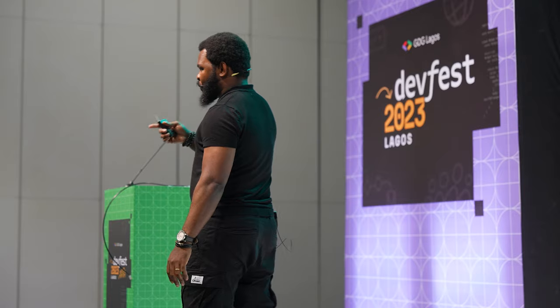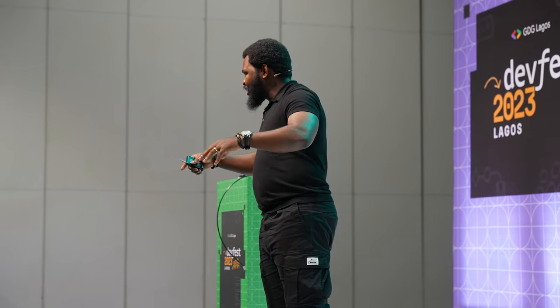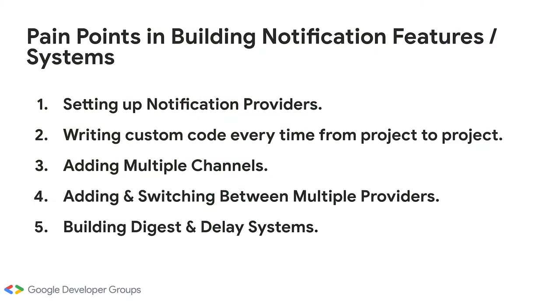Then your boss comes and says email isn't enough — let's add SMS. What's a popular SMS provider? Termii. So you sign up on Termii, go to their developer page, look for their library, install it, use the Termii SDK or API in your code, and integrate it. Then your boss comes again and says let's add push notifications. So you look for Firebase FCM. If you're doing Apple, you need APNS. Then you have to integrate that again.